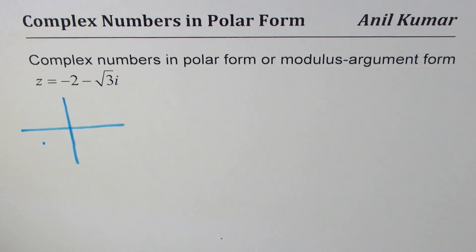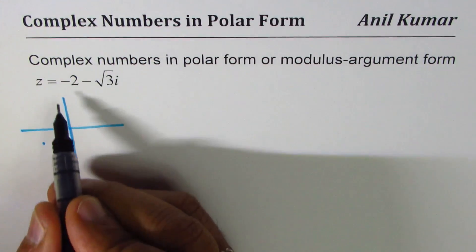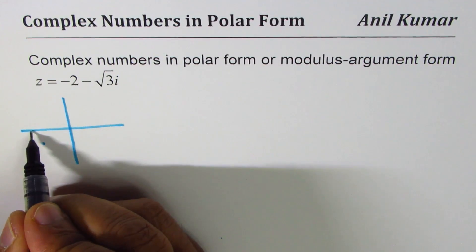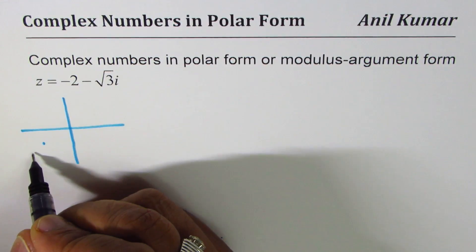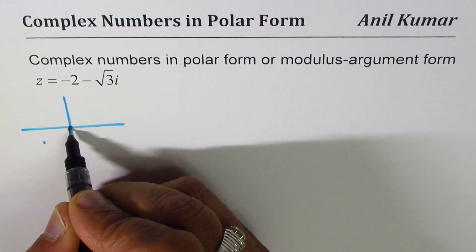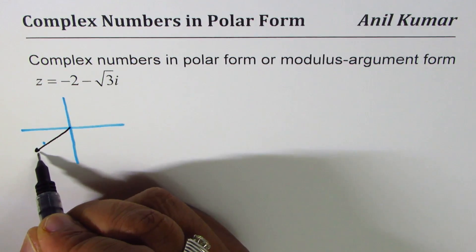Both are negative, so we are in quadrant 3. -2 means 2 units to the left, -√3 means √3 down.